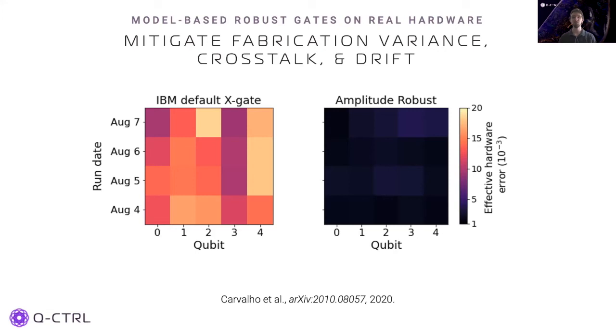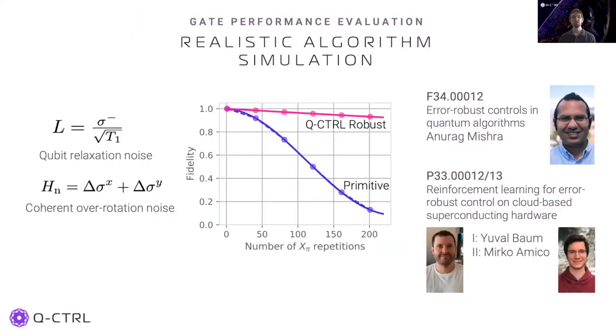For details of our error-robust controls, you can take a look at the archive paper shown here. So what does this mean for algorithm simulation? We have developed a realistic model-based algorithm simulator to incorporate hardware noise channels. This includes qubit relaxation noise and coherent noise such as over-rotation errors due to calibration errors or parameter drift.